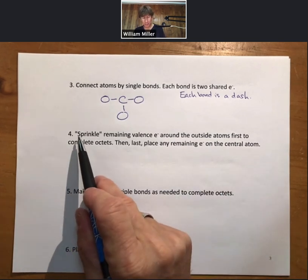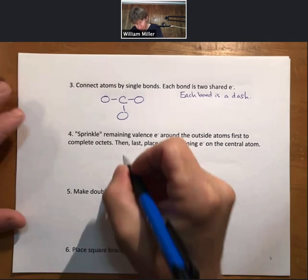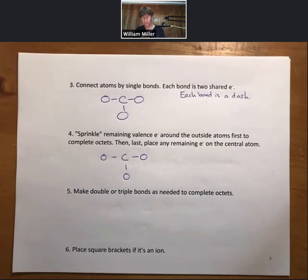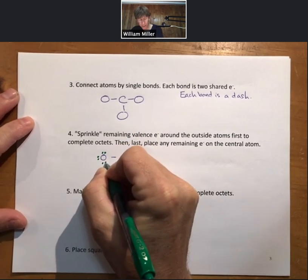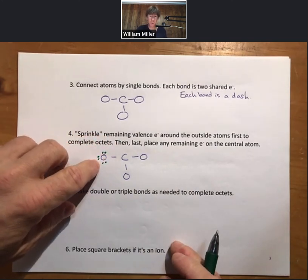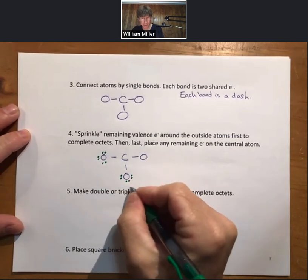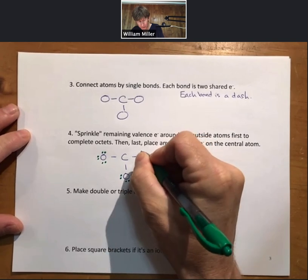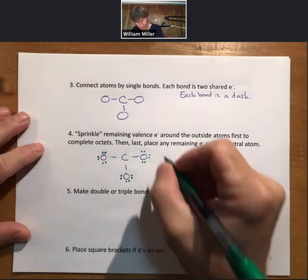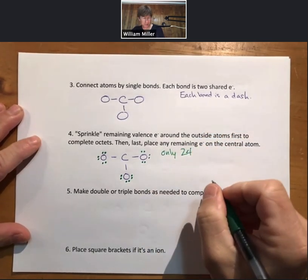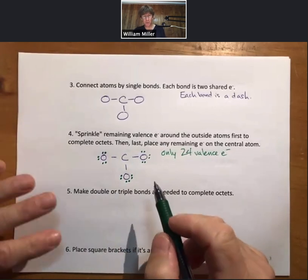Step four says sprinkle remaining valence electrons around the outside atoms first to complete octets. I have two for six. I'm going to do two more for eight. Eight, ten, twelve. This oxygen on the left now has an octet. I have a total of 12 electrons in my Lewis structure. Fourteen, sixteen, eighteen. Now we have an octet for this oxygen. Twenty, twenty-two, twenty-four. A key part of Lewis structures is you can only put the exact number of valence electrons in the compound.